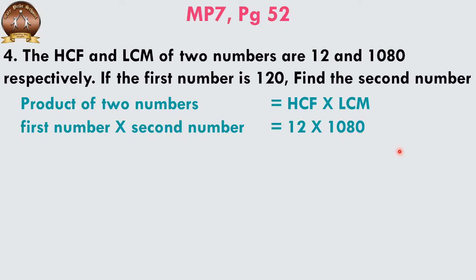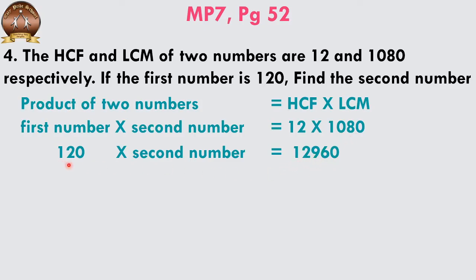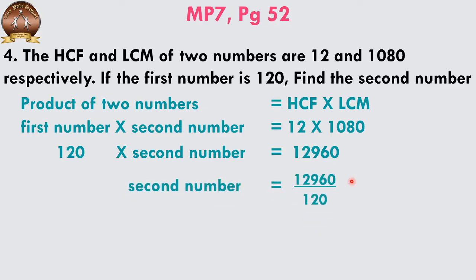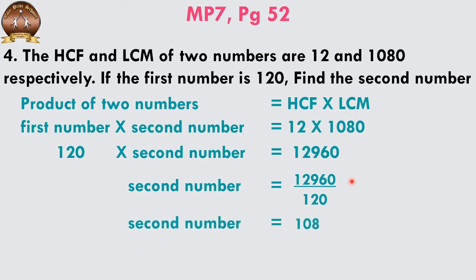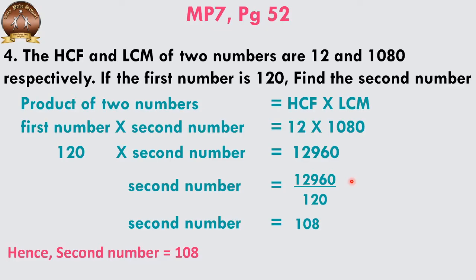The first number is 120. So we write 120 under the first number, and the second number is yet to be found. Multiplying HCF and LCM gives us 12,960. The first number moves to the right side and we divide 12,960 by 120, which gives us 108. So 108 is the second number.